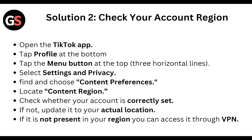Select Settings and Privacy, then find and choose Content Preferences and locate the Content Region. Check whether your account is correctly set to your actual location. If it is not presenting your region correctly, update it to your actual location. You can also use a VPN to access the correct region.